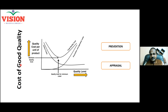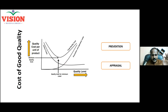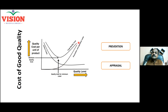When you add these together, that is called cost of good quality. In the initial stages of any product development, product quality will be very low. But when you spend more on cost of prevention and cost of appraisal, product quality will keep on improving. The cost of good quality continuously increases because then only the quality level will improve. As the quality level improves, cost of good quality will also increase.